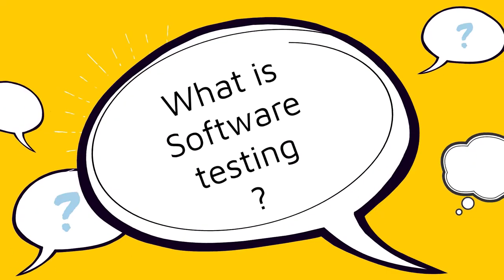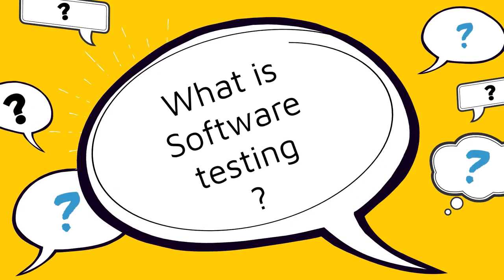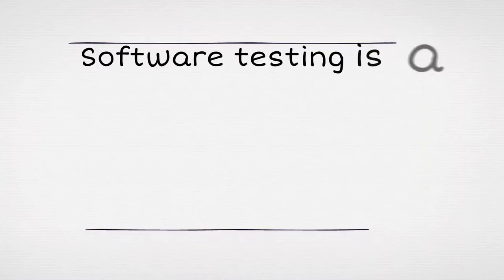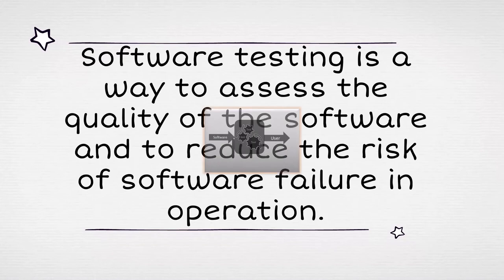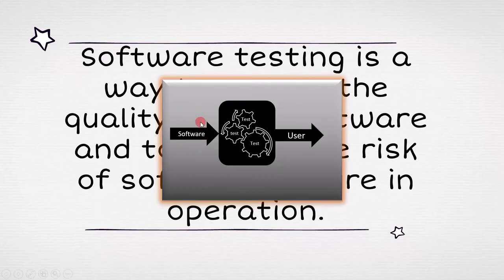The first question is: what is software testing? Software testing is a way to assess the quality of the software and to reduce the risk of software failure in operation. Once the developer develops software, it is not directly given to the user. Before giving it to the user, the software undergoes a process to find out the defects and risks associated with the software. This process is called testing.